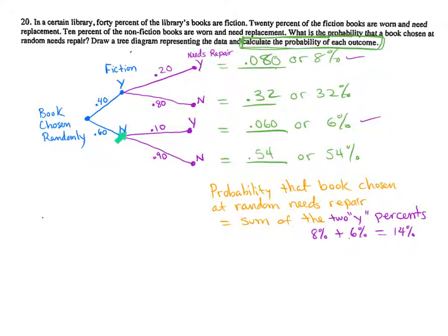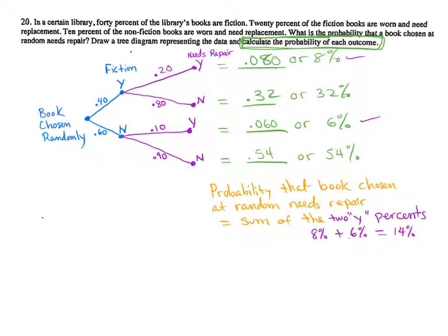Then we draw two segments from the 'not fiction' node. That represents nonfiction books. Looking at the sentence that says 10% of the nonfiction books are worn and need replacement — so if it's nonfiction, then 10% of those will need repair. We put a yes here meaning yes, it needs repair — 10% need repair. And if 10% need repair, then 90% do not need repair, so the other branch is 'no,' representing not needing repair. That completes the tree diagram.